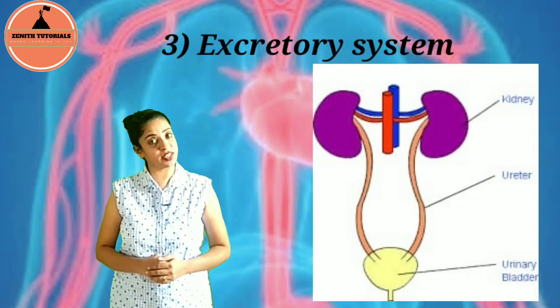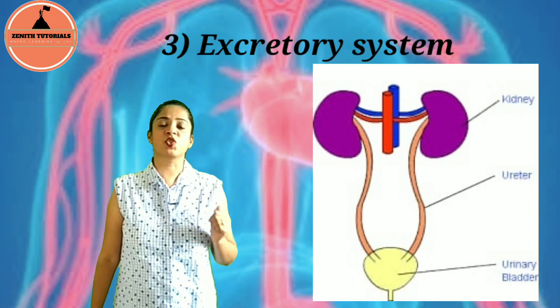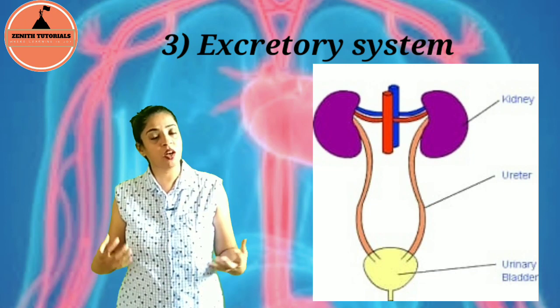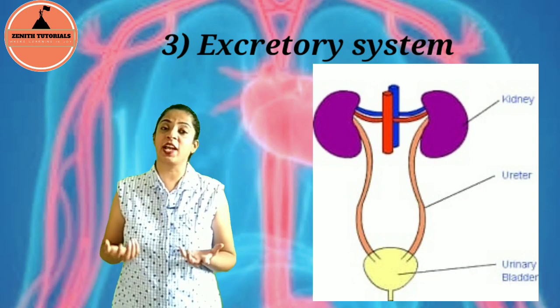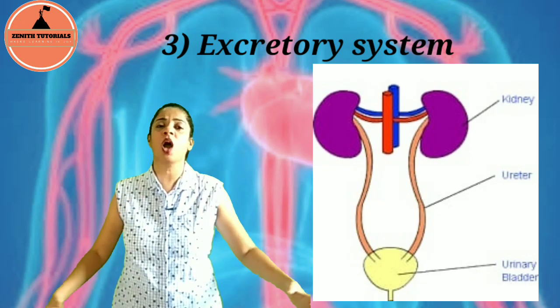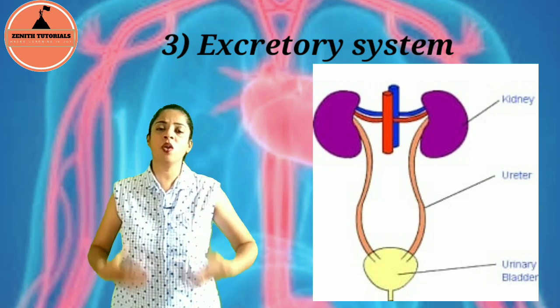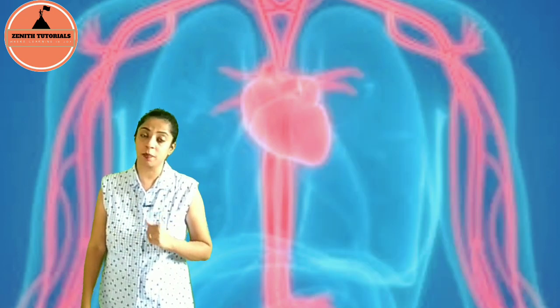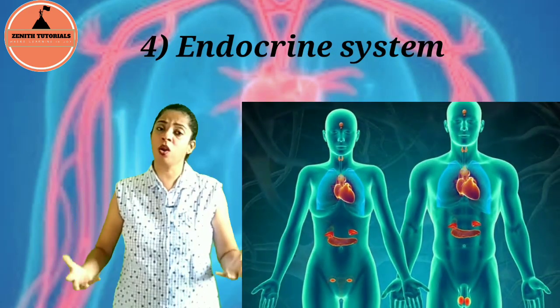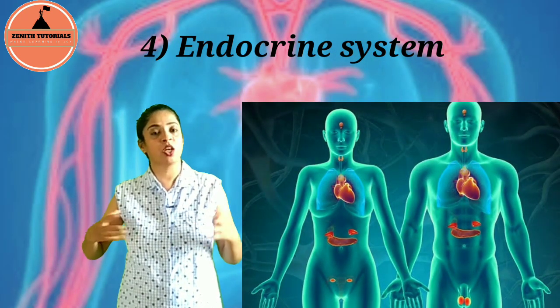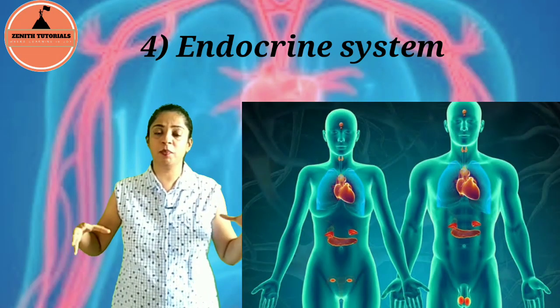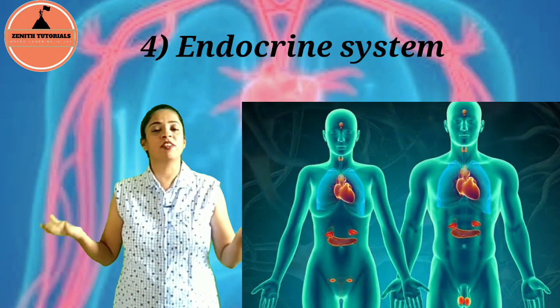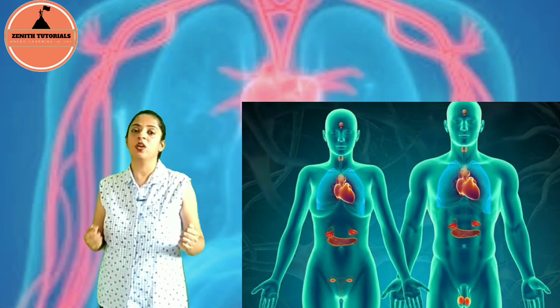Third is the excretory system. All the excess water, salts, and nitrogenous waste like urea have to be thrown out of the body through the excretory system, and this involves the circulation of fluids. Fourth is the endocrine system. Endocrine glands secrete hormones, and these hormones are passed in the blood, which carries them to wherever they are required.